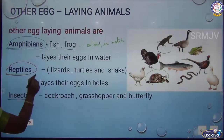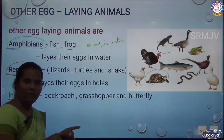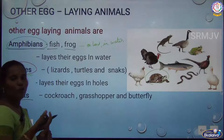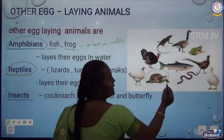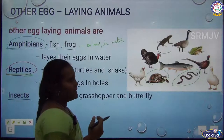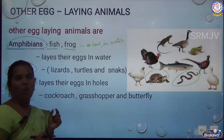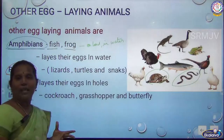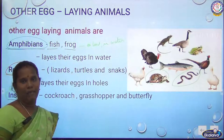Insects are all the small creatures — examples are mosquito, butterfly, grasshopper, housefly, and ladybug. All insects lay their eggs using the same process.